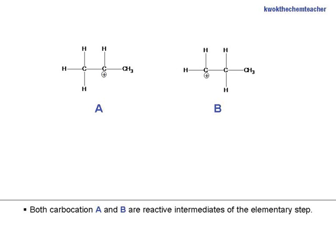Both carbocation A and B are reactive intermediates of the elementary step. But which is more likely to be formed?